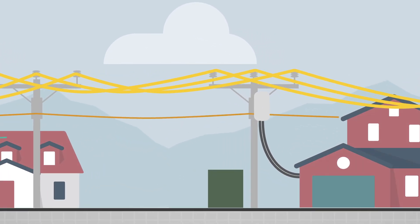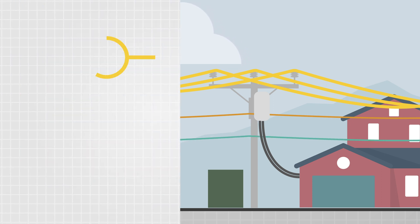On a utility pole, you may see several different sets of wires mounted at different heights. Typically, the electric lines are at the top. The lowest wires are telephone wires, and the wires that run in between are cable wires. Any utility pole that carries electric wires belongs to Central Hudson.